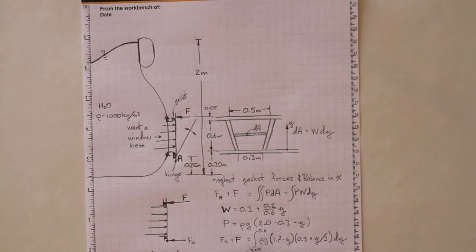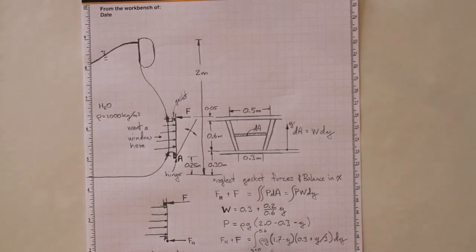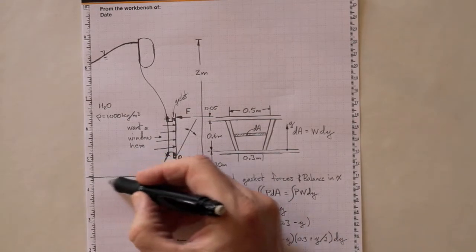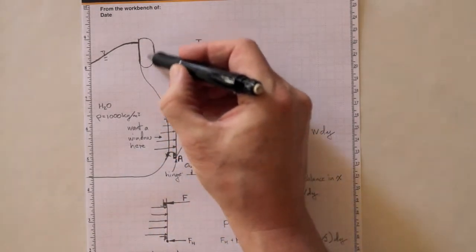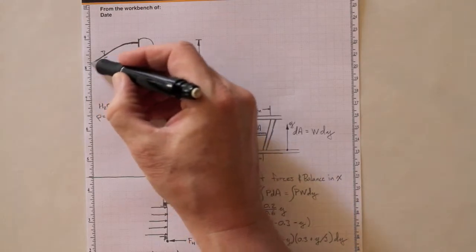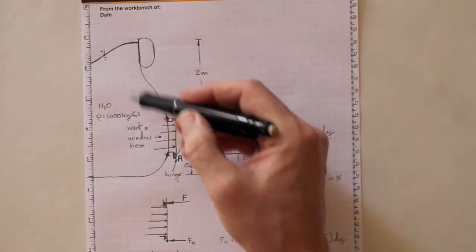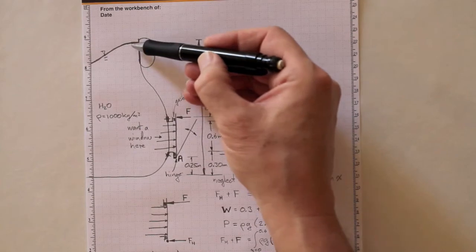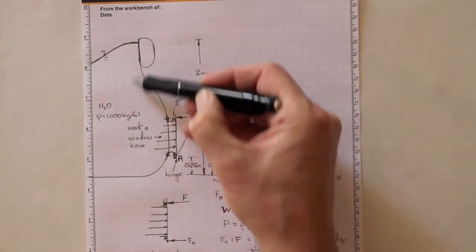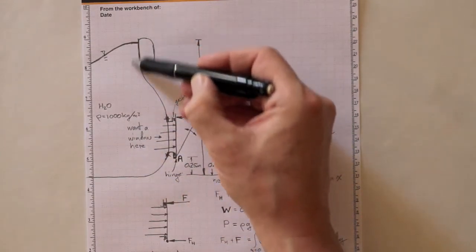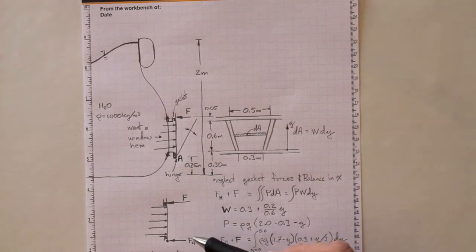We've seen the waves in the swimming pool in the video where it sloshes out towards the outside, comes to a stop, and then goes back in and forms a big wave in the middle. If this is the edge of our flexible swimming pool and this is the wave out towards the edge which has now more or less come to a stop, then it's not a bad guess to say that this is probably stationary fluid and we can apply the fluid statics rules to it.